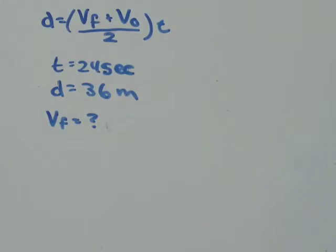A bird accelerates north from rest in 24 seconds and it travels 36 meters. In that 24 second period, what is the bird's final velocity?